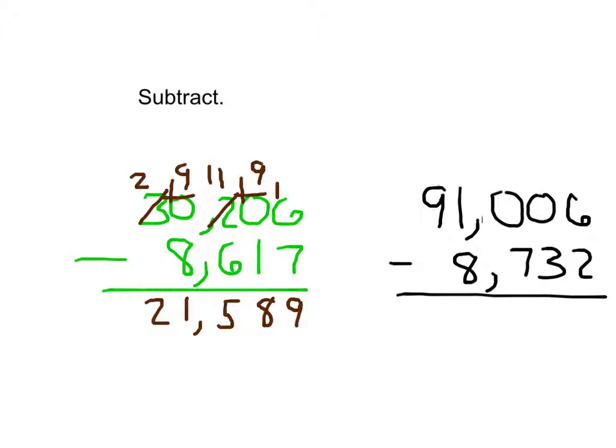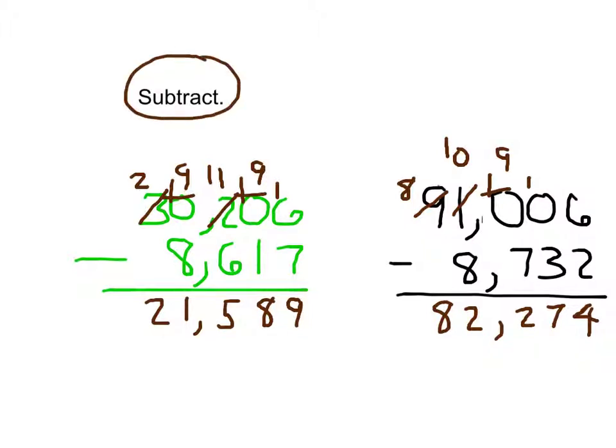In the next problem, 6 minus 2 is 4. 0 minus 3. I cannot do that. I can't regroup from the hundreds place, but I can regroup from the thousands place. The 1 becomes a 0 so that the 0 can become a 10. 10 becomes a 9. So this 0 becomes a 10. And then I've done my regroups. 10 minus 3 is 7. 9 minus 7 is 2. 0 minus 8 can't do that. So the 9 becomes an 8. So the 0 can become 10. 10 minus 8 is 2. And 8 minus 0 is 0. 82,274 is my answer. And in this case, the instructions just said to subtract. We are finding out the exact answer.